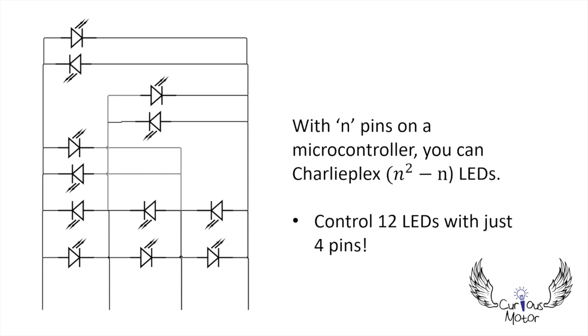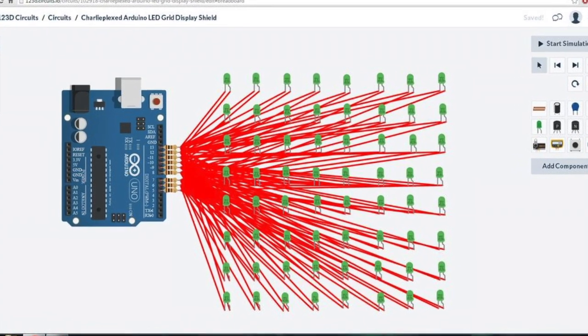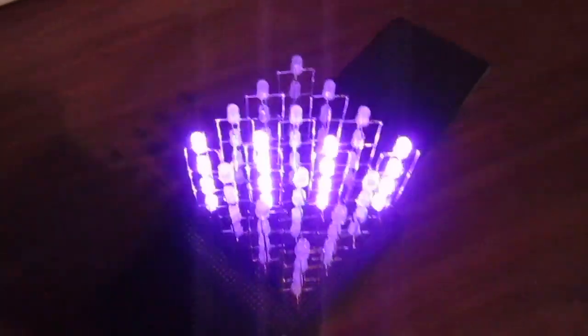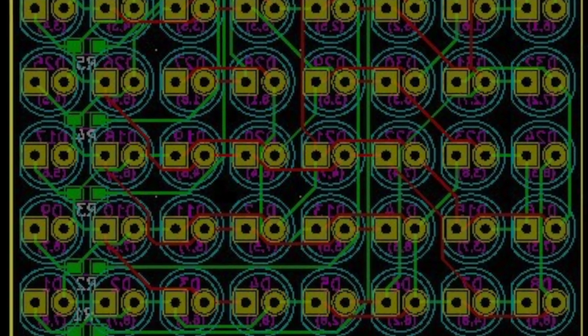We can control n squared minus n LEDs with just n pins from the microcontroller, but the circuit could become really messy and confusing with more than three pins. All in all, it's a great trick to incorporate when you're designing a custom PCB or don't want to add additional hardware to your project.